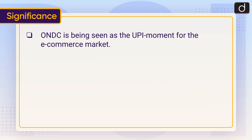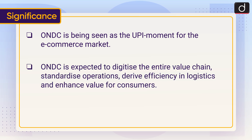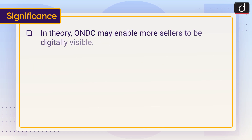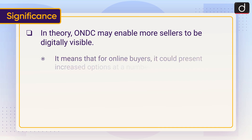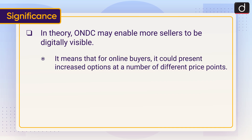ONDC is being seen as the UPI moment for the e-commerce market. It is expected to digitize the entire value chain, standardize operations, drive efficiency in logistics, and enhance value for consumers. In theory, ONDC may enable more sellers to be digitally visible, offering online buyers more choices and better price points.